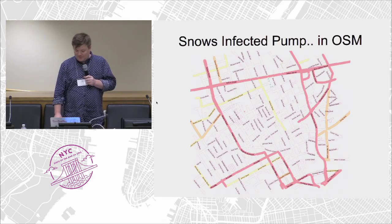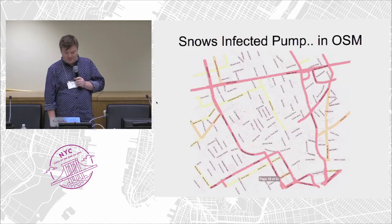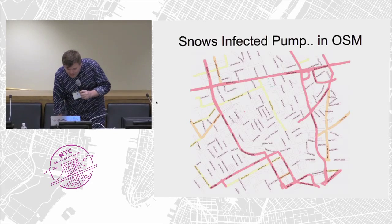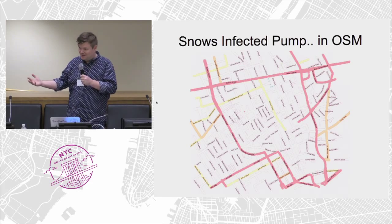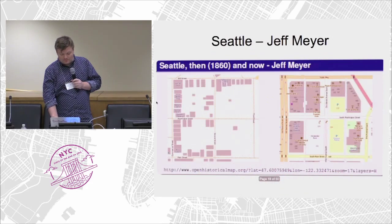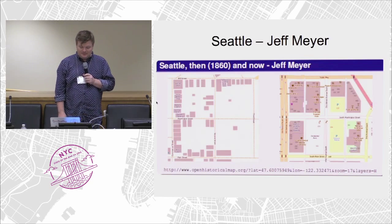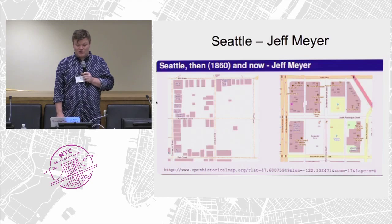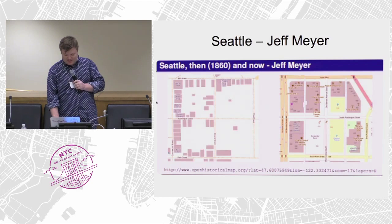This is in Open Historical Map — we have the same map with the streets in Open Historical Map with the pump there on Broad Street. Jeff mapped Seattle, and in certain areas you can see where the blocks have changed considerably from lots of little houses to — I don't know what that is — Starbucks perhaps. One big block of Starbucks.